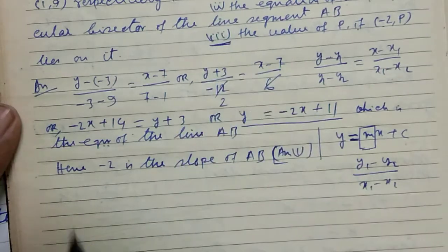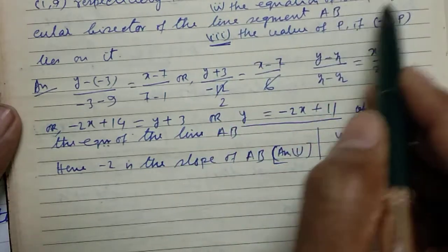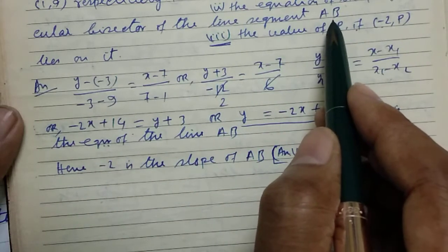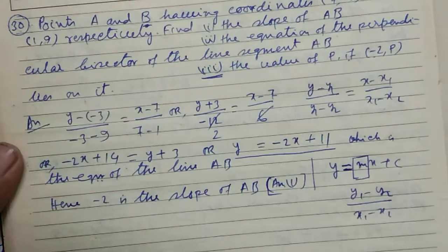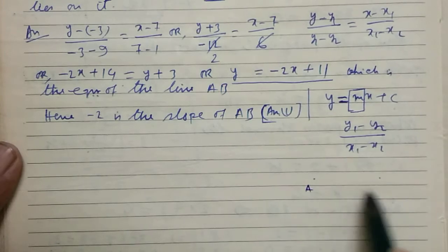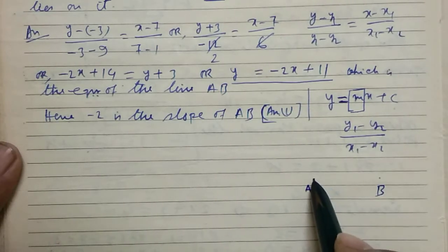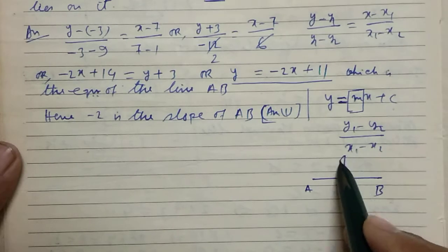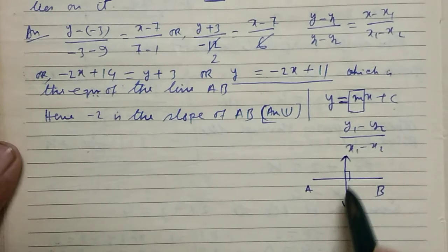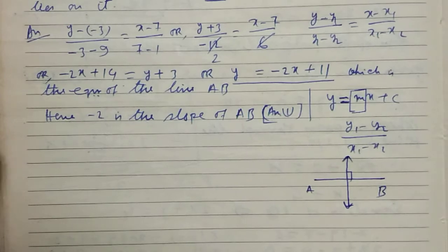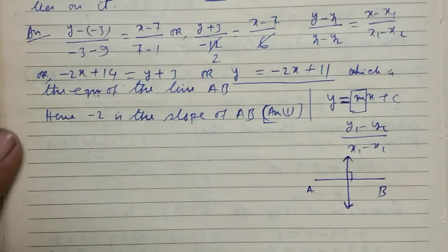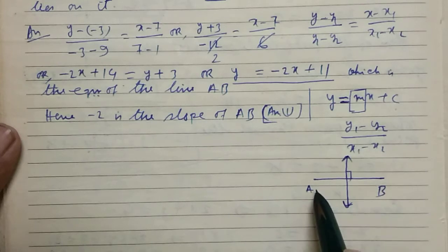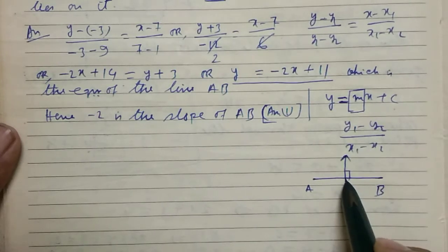Now second, the equation of the perpendicular bisector of the line segment AB. That is if A and B are the two points and line segment, that is the line equation we have to find. To determine this equation at first, we have to find the midpoint of AB.